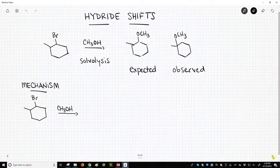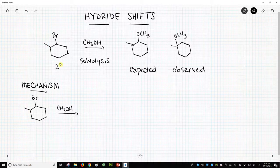At the top of the screen, we have a halide. This is a secondary halide, and it's going to undergo a solvolysis reaction using an alcohol solvent, which is typical.